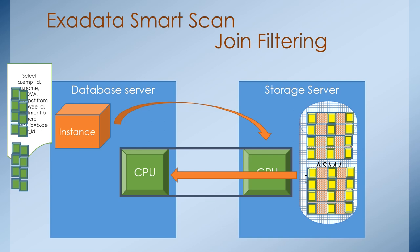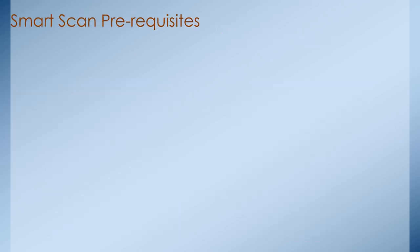The enormous database IO operations and data passing through a narrow CPU tunnel are all reduced in Exadata. This is the main reason why Exadata can produce enormous database performance improvement compared to any other appliance in the market. Now let's see what are the prerequisites for Exadata smart scan, and how to identify whether a query is using a smart scan or not.